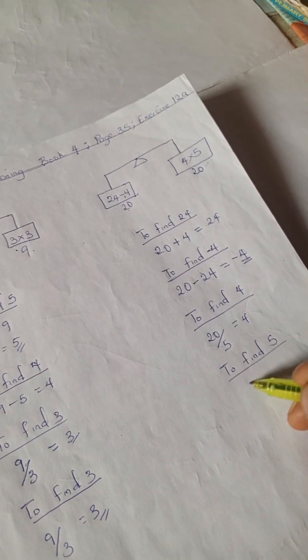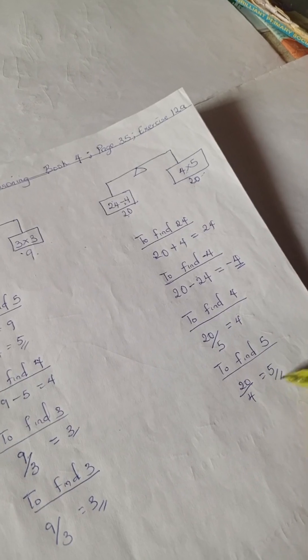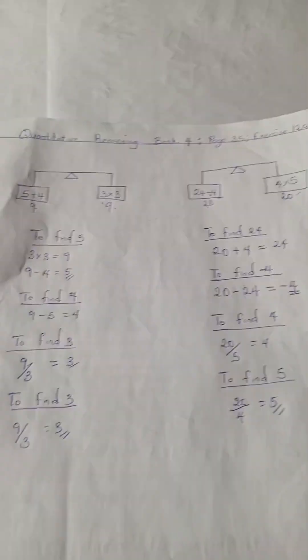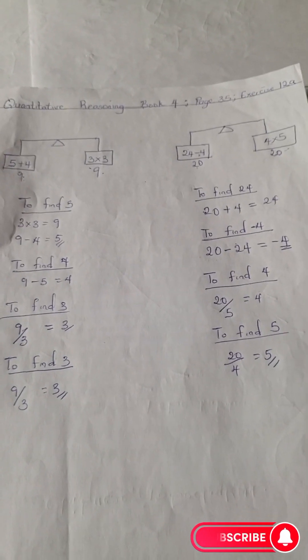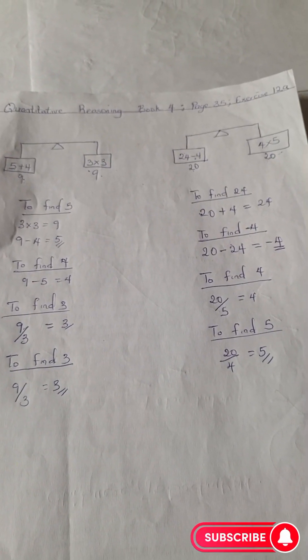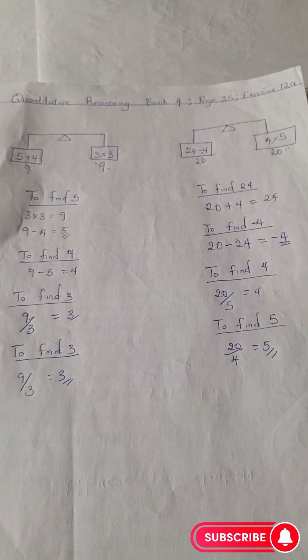And to find 5, we have 20 divided by 4 is 5, right? So I hope you understood this section. Thank you very much and please like and subscribe to this channel for more quantitative reasoning solutions.